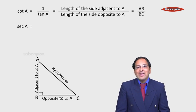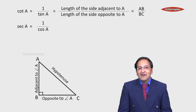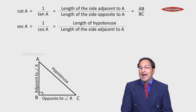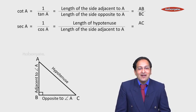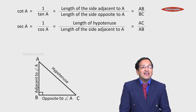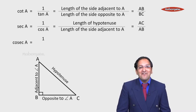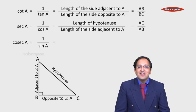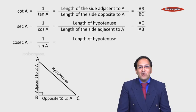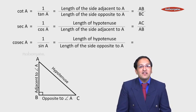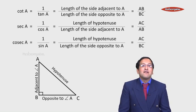Sec A is 1 upon cos A, which equals the length of the hypotenuse divided by the length of the side adjacent to A. The hypotenuse is AC and the adjacent side is AB, so sec A equals AC upon AB. Lastly, cosec A is 1 divided by sin A, which equals the length of the hypotenuse divided by the length of the side opposite to A, giving AC upon BC.